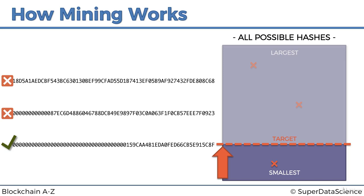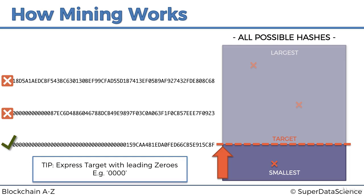Before going into detail, I want to give a small tip: a good way of thinking about the target is in terms of leading zeros. The lower the hash, the smaller the number, and the more leading zeros there'll be. So rather than remembering the exact target value, just remember the number of leading zeros — for instance, four leading zeros. In the practical tutorials, you'll actually use these four leading zeros when coding a blockchain.